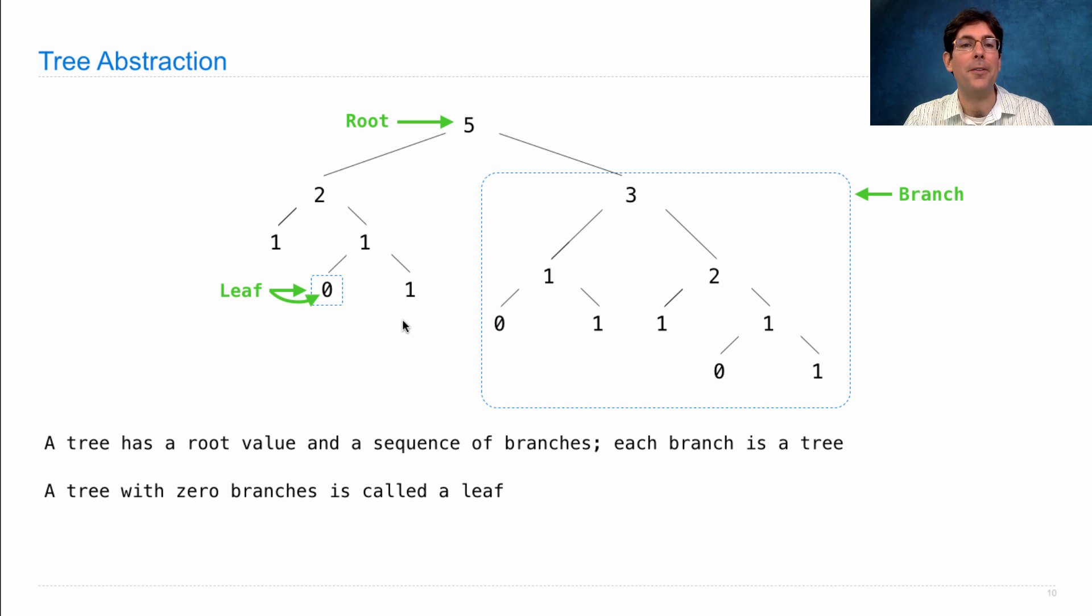So I might say, the leaves of this tree are 1, 0, 1, 0, 1, 1, 0, and 1.